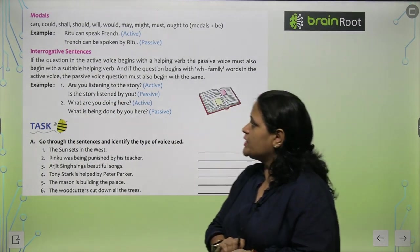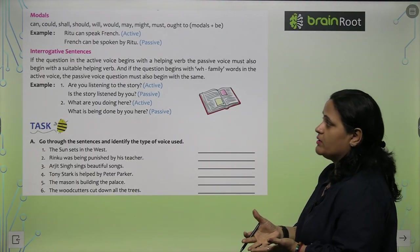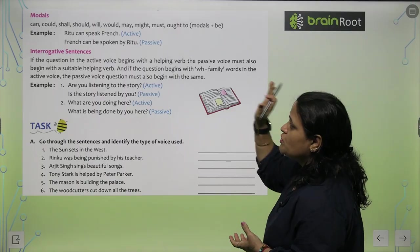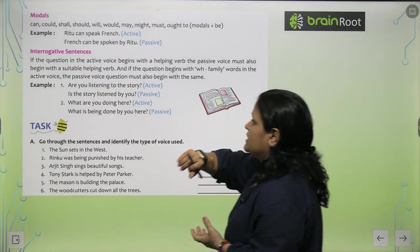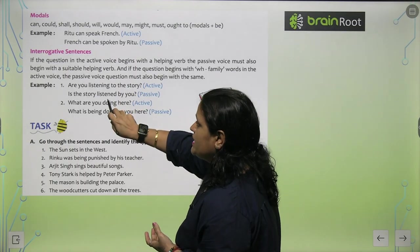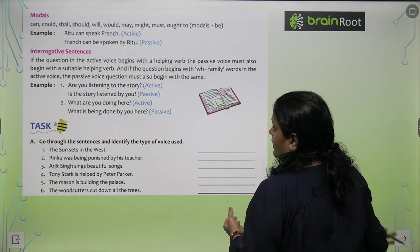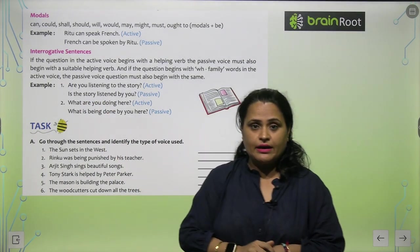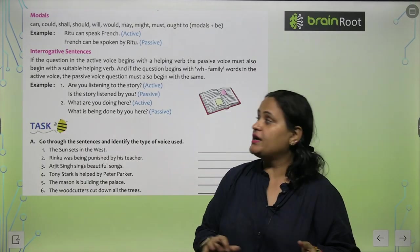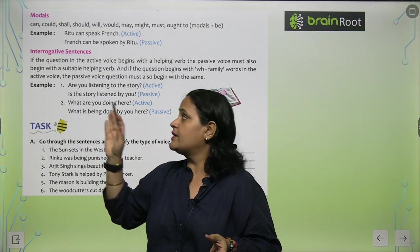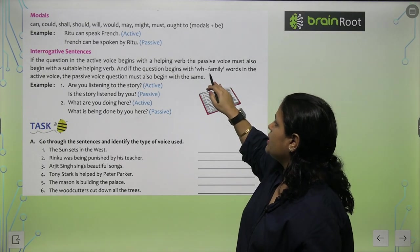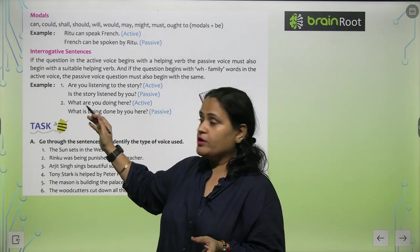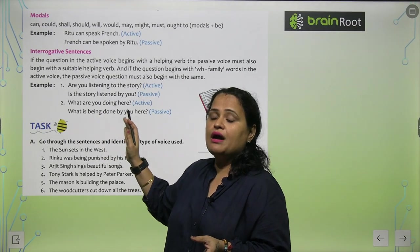Interrogative sentences: if the question in the Active Voice begins with a helping verb, the Passive Voice must also begin with a suitable helping verb — 'Are you listening to the story?' becomes 'Is the story being listened to by you?' And if the question begins with WH-family words in the Active Voice, the Passive Voice question must also begin with the same — 'What are you doing here?' becomes 'What is being done by you here?'